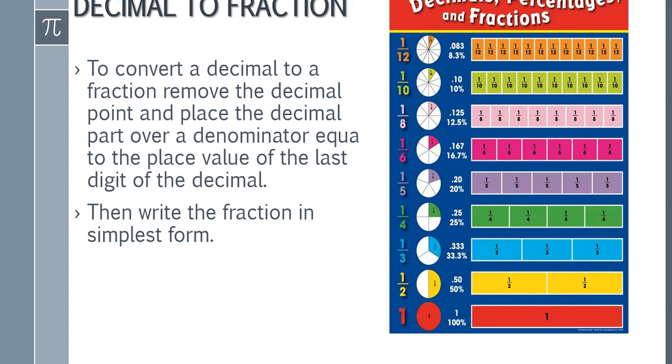To convert a decimal to a fraction, we remove the decimal point and place the decimal part over the denominator equal to the place value of the last digit of the decimal. Then we write the fraction in the simplest form.